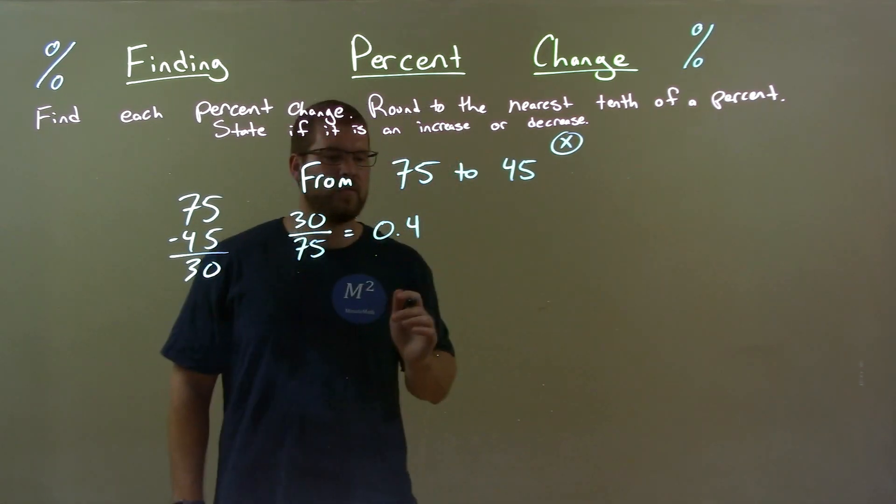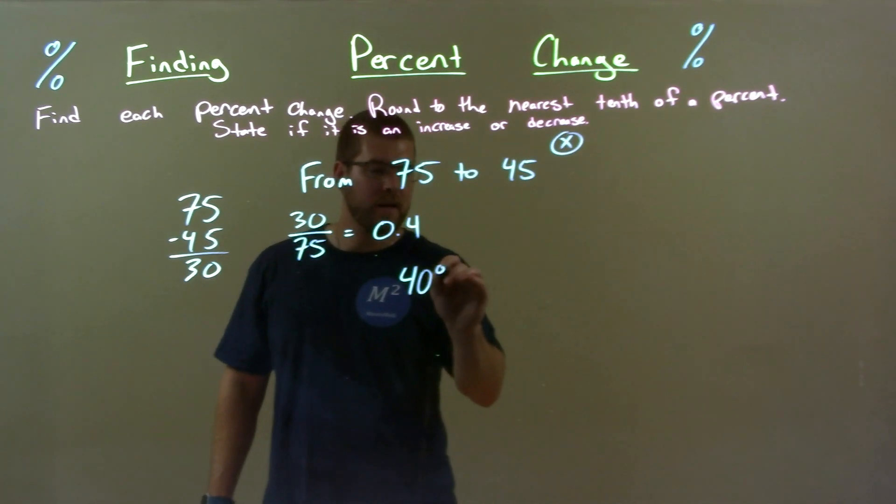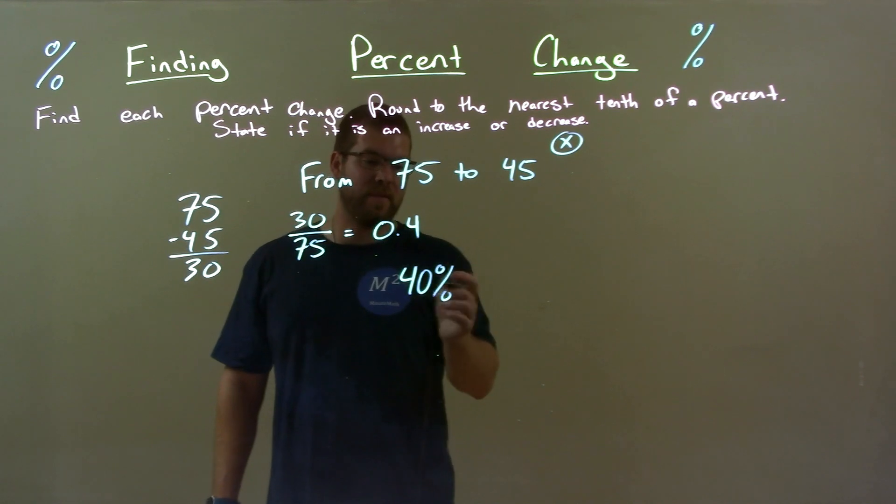We need to convert that to a percent. The decimal moves two spots to the right, making that 40 percent, and it's already to the nearest tenth because there's nothing else afterwards.